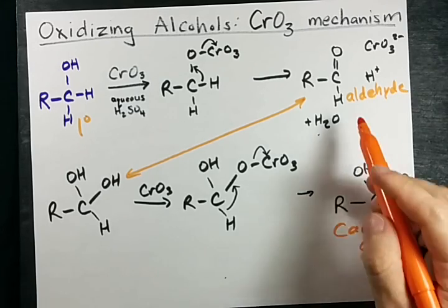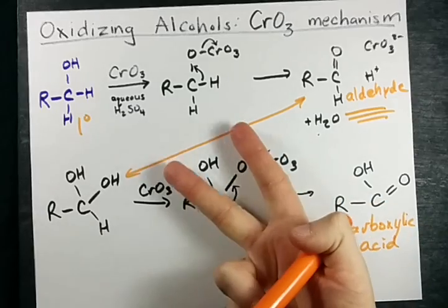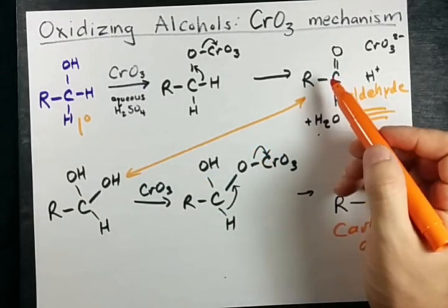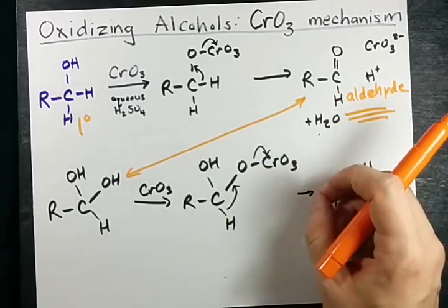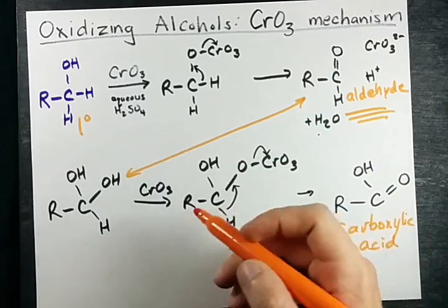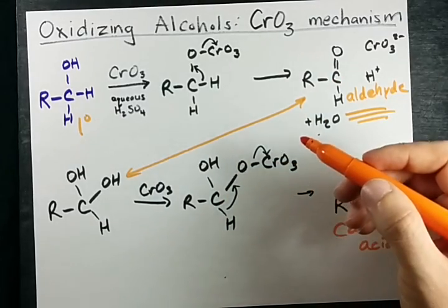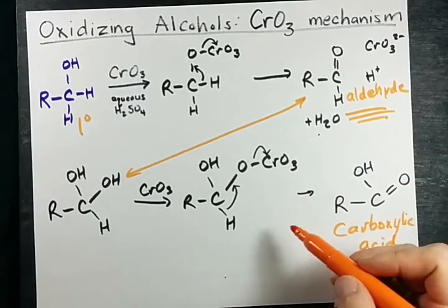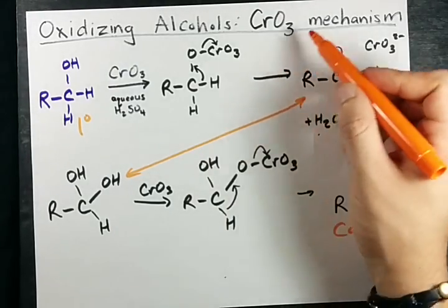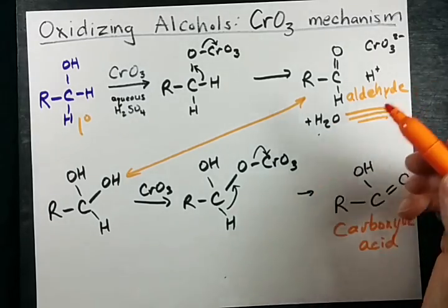Your question may be: how do I stop at the aldehyde? Well, there are two main ways that we do that. The first: if the aldehyde is volatile enough — if it has a small enough molecular weight or if the boiling point is low enough — what you can do is collect the aldehyde as it boils off of your solution and collect it separately in one of those cooling columns.